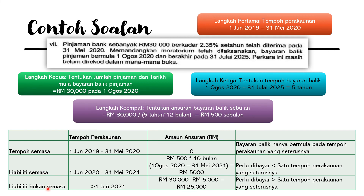What goes into liability bukan semasa? Everything else — the balance. Total pinjaman RM30,000 minus the RM5,000 categorized as liability semasa gives a balance of RM25,000. This RM25,000 is categorized as liability bukan semasa. Kesimpulan: amount yang perlu dibayar balik pada tempoh perakaunan yang seterusnya dikategorikan sebagai liability semasa, and the balance as liability bukan semasa. I hope this easy to understand video was helpful. Please stay tuned for upcoming videos, subscribe, like, and join my Telegram channel for free coaching classes. Thank you and see ya!